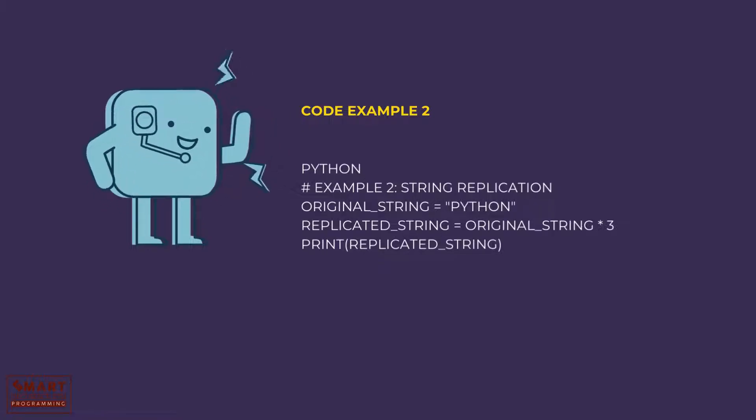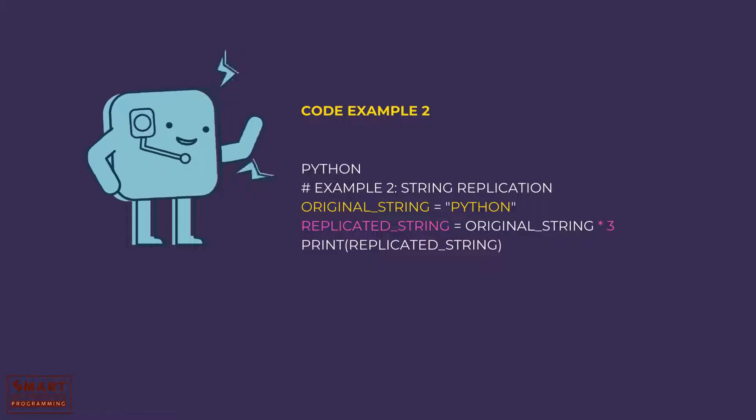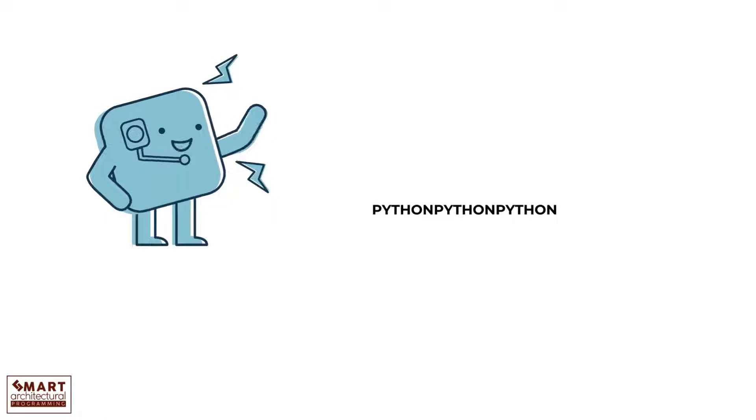In this example, we have the original_string containing 'Python'. We use the asterisk operator to replicate it three times, creating the replicated_string, which is 'Python Python Python'.